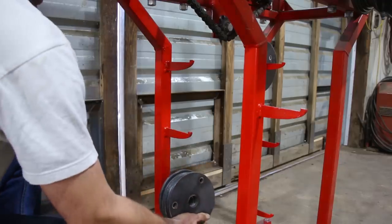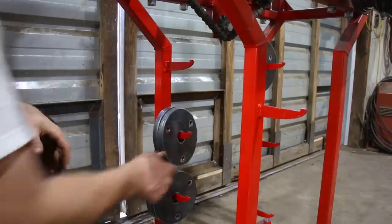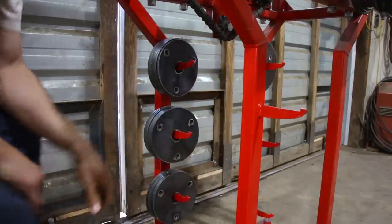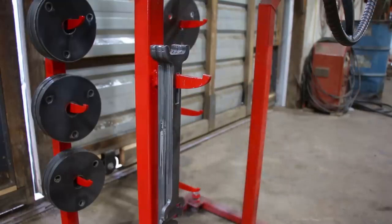I welded some pegs onto the lower frame to store all the additional plates. And I also cut some stops that I could use to hold the spring-loaded middle roller in place, so I could extend the bottle jack out for deeper bends.